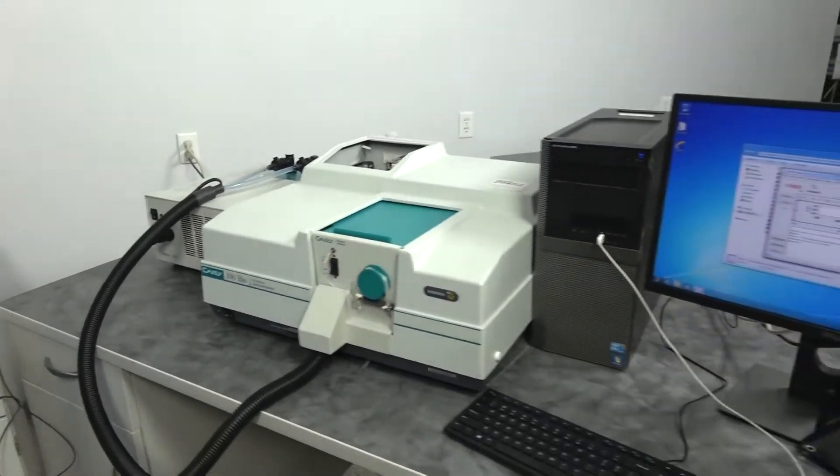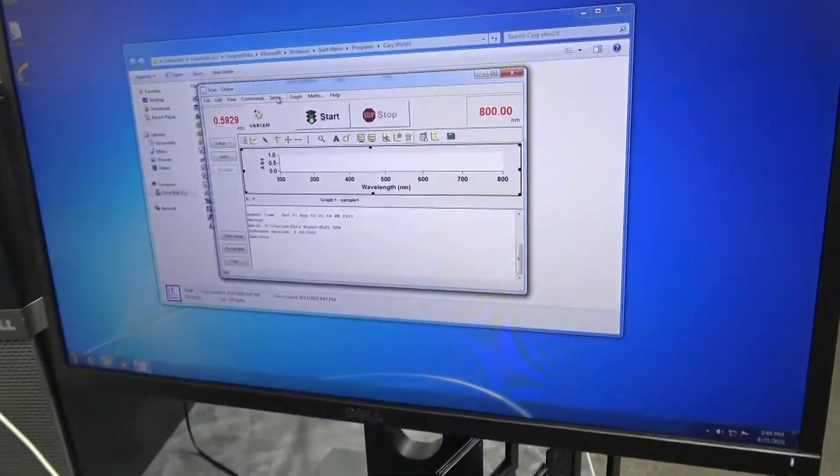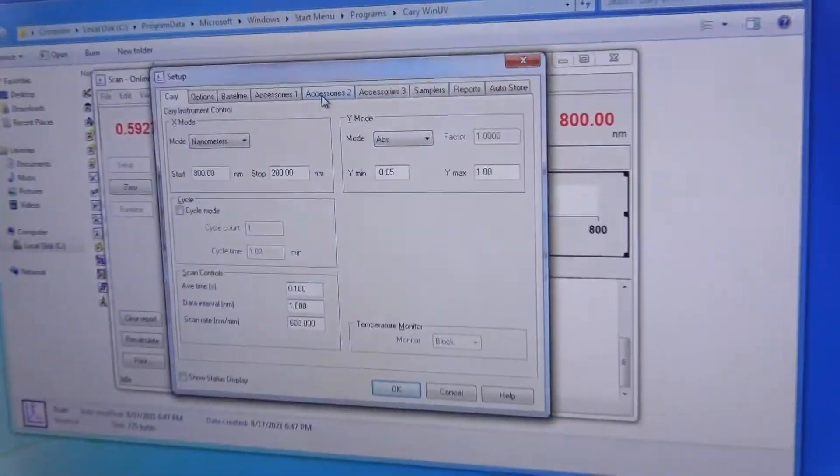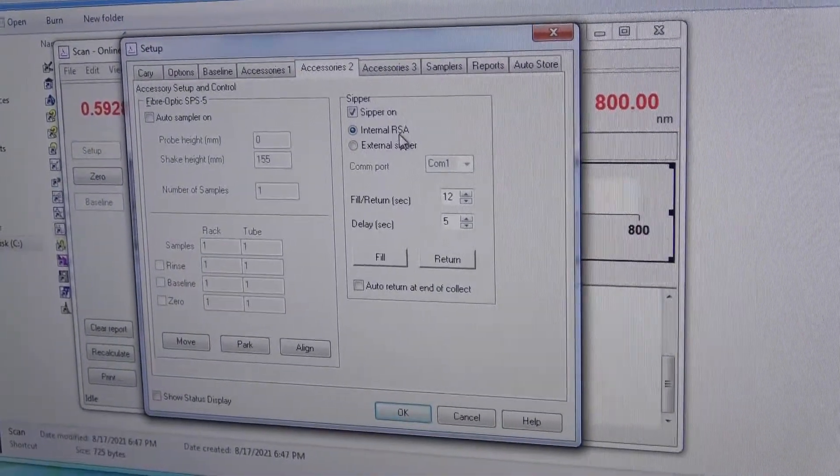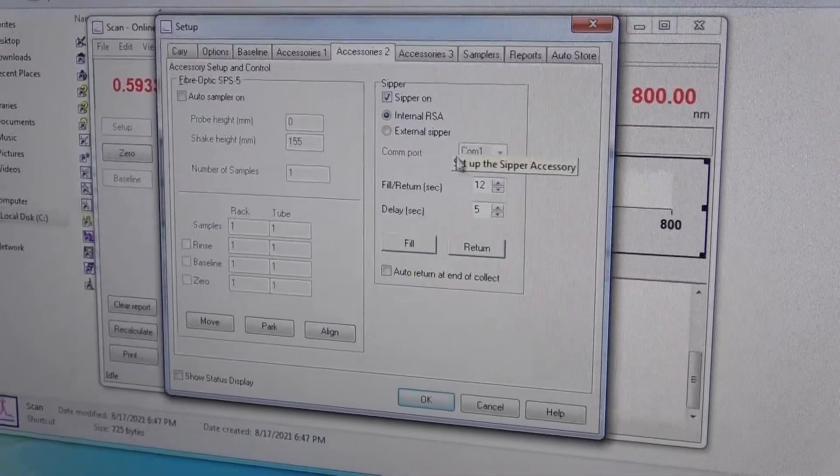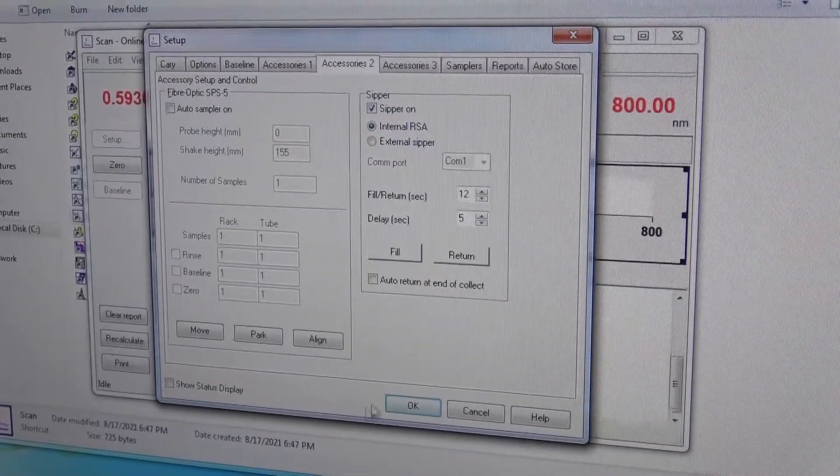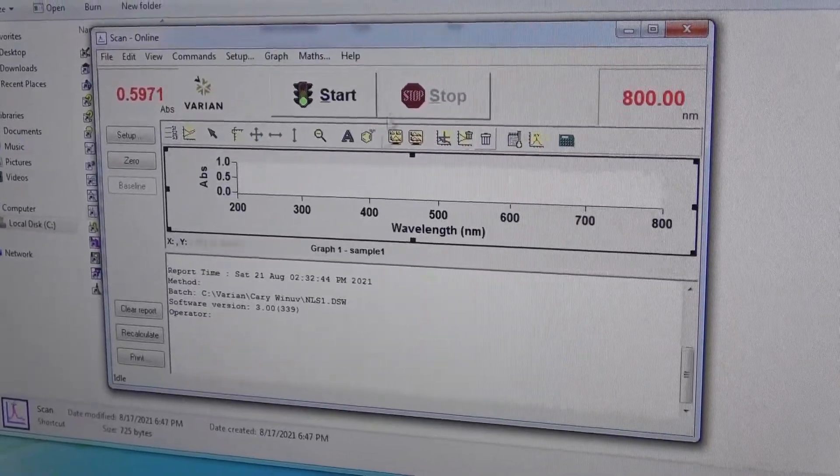Software is controlled much the same way. You go into the setup, accessory 2 in this case. That's your sipper models. This is an internal routine sampler. Sipper is on. You can set your delay and the like. Click OK. Now when you run your sample.